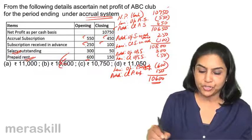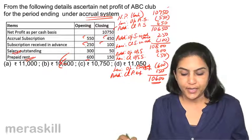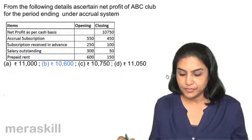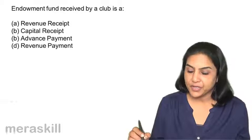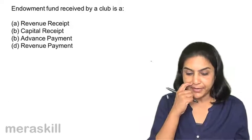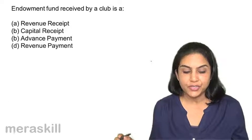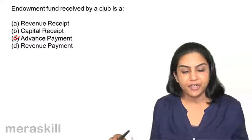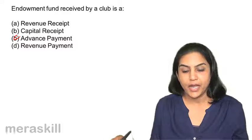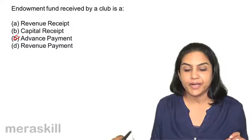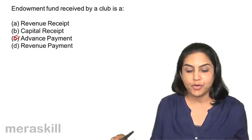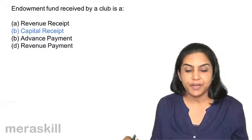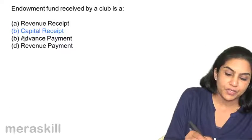The correct answer is $10,600. Next question: endowment fund received by a club is A. a revenue receipt, B. a capital receipt, C. an advanced payment, D. a revenue payment. Endowment fund is a capital receipt — the correct answer is B, capital receipt.